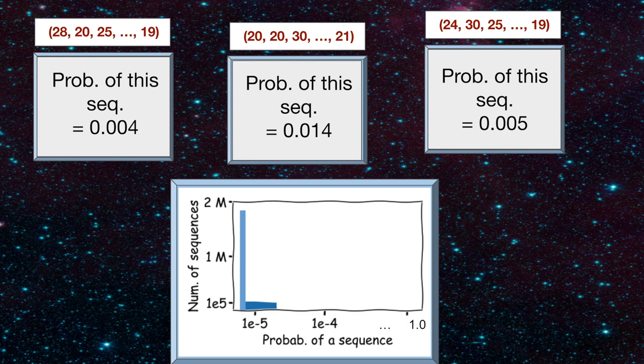Ashley observes three kinds of sequences: those that have high probability, and there aren't a lot of those, the bars are so tiny. Ones that almost never occur, and almost all sequences are of this type. And a group in between.